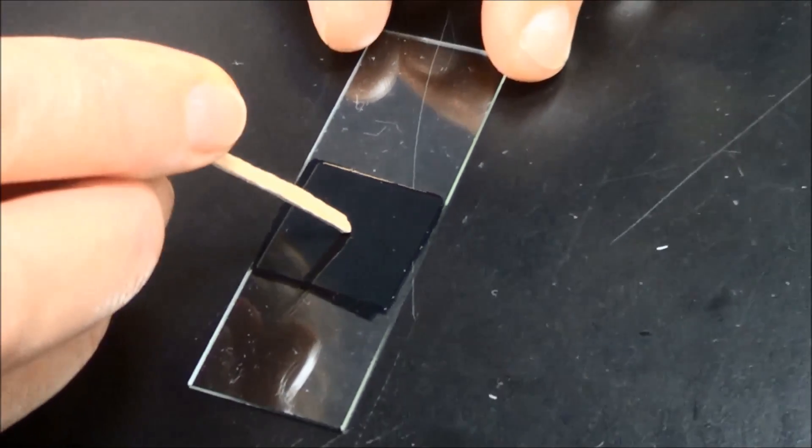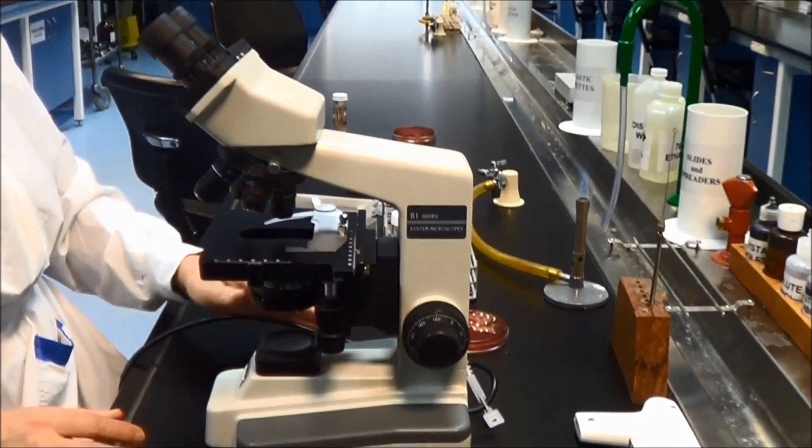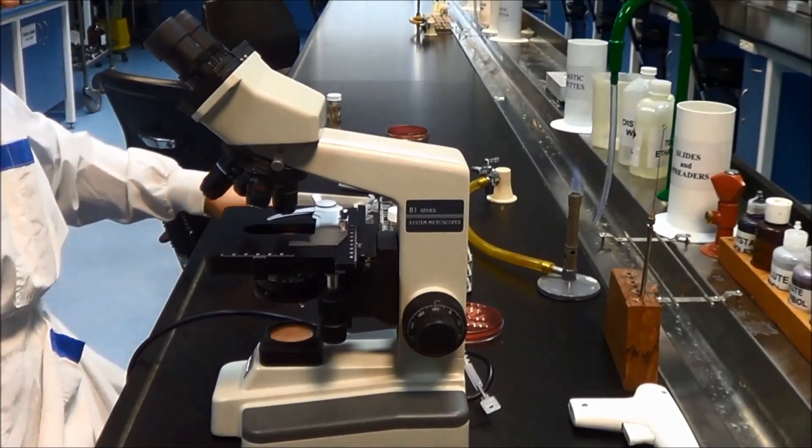Examine the stained wet mount by standard brightfield light microscopy. Start with the 10× objective and ensure the condenser is raised.